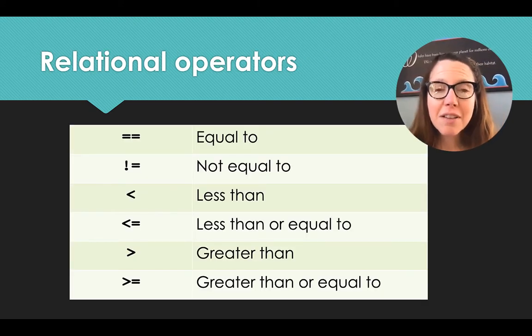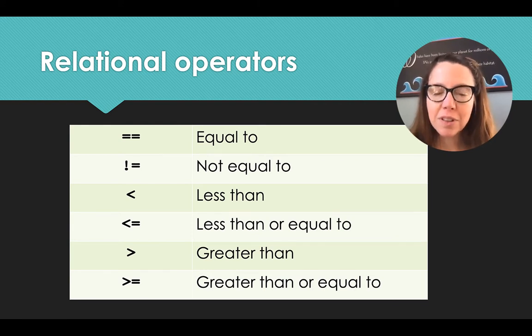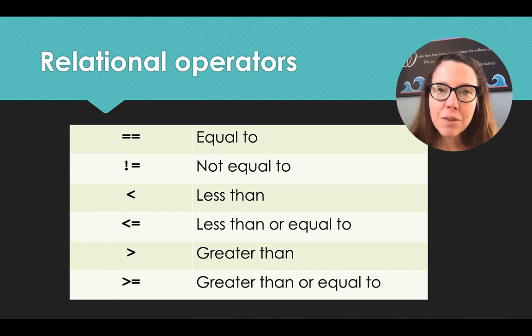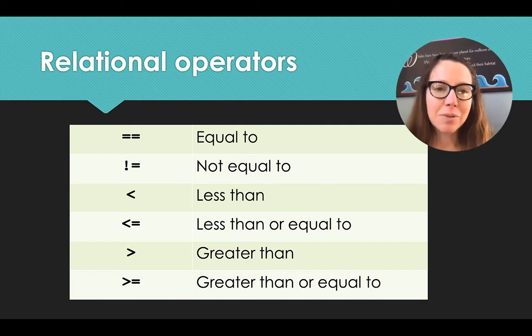So we have several relational operators that we can make use of. The first being we can do a check for equality. And when we check that two things are equal, two numbers are equal, we make use of the equal sign but we do it twice. So we have equals equals. A is equal equal to B. Not equal to, we use an exclamation point and an equal.